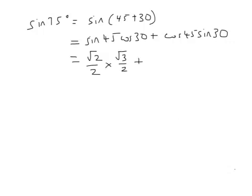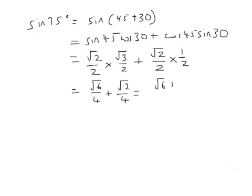And the sine of 30 is a half. So this is root 6 over 4 plus root 2 over 4, or root 6 plus root 2, all divided by 4. And there's a similar application for all sorts of other angles, which we're going to look at in the lesson.